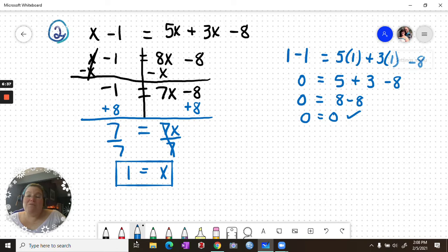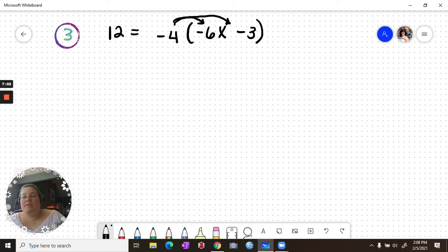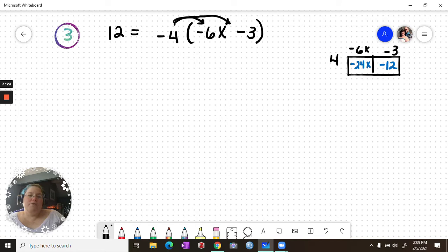And then we'll take a look at our third example, which involves simplifying first using the distributive property. So this one, we have 12 equals negative 4 times negative 6x minus 3. The distributive property, remember, you can multiply this 4 into both parts. You may remember using the box method first semester: negative 6x minus 3 across the top.